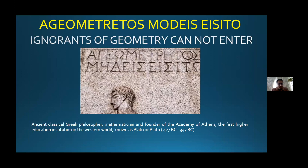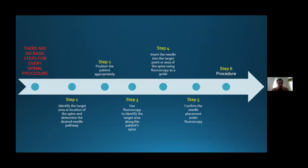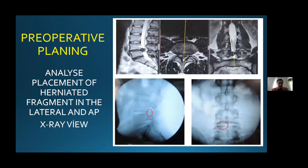There are some basic steps for every spinal procedure, including endoscopic spine surgery for all kinds of approaches — transforaminal, UVA, or stenoscopic. The first step is preoperative planning. We must analyze the placement of the hernia fragment in the lateral and AP X-ray view, because during the procedure we are facing X-ray and fluoroscopic views.